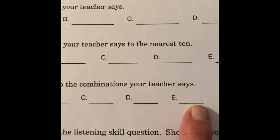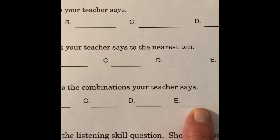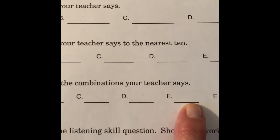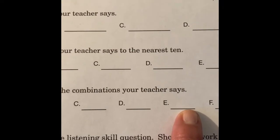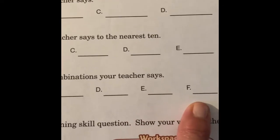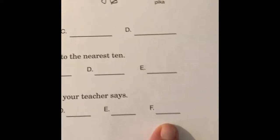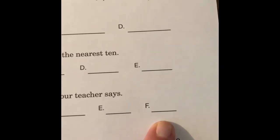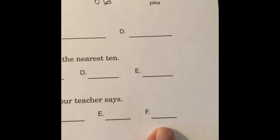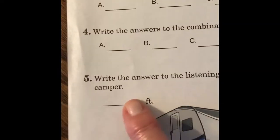E, 4 plus 3 plus 5. 4 plus 3 plus 5. F, 9 take away 6 plus 4. So, it's 9 minus 6 plus 4. Okay, let's go to number 5.